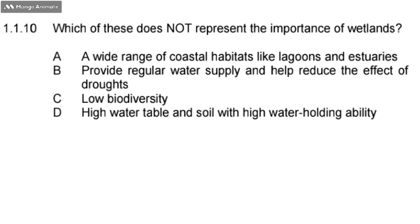Which of these does not represent the importance of wetlands? A. A wide range of coastal habitats like lagoons and estuaries. B. Provide regular water supply and help reduce the effect of droughts. C. Low biodiversity. D. High water table and soil with high water holding abilities.